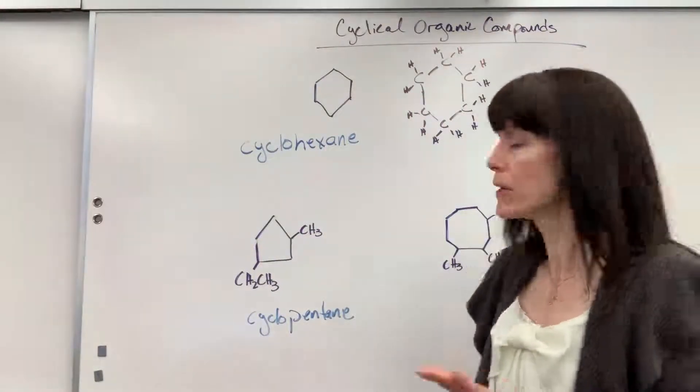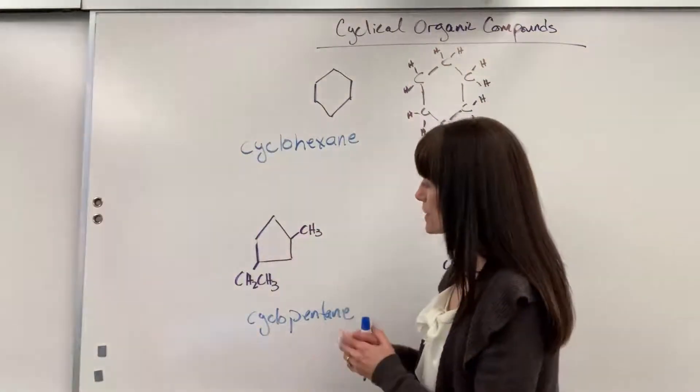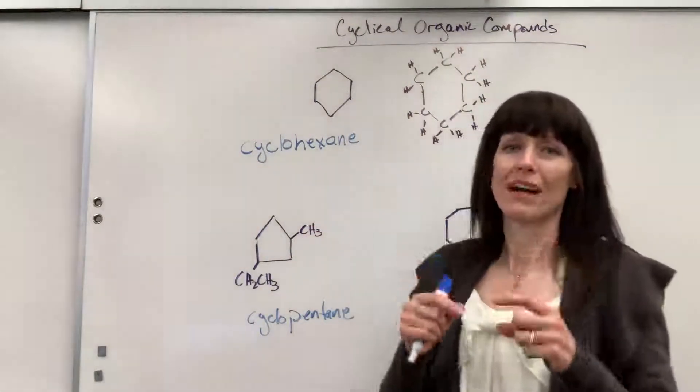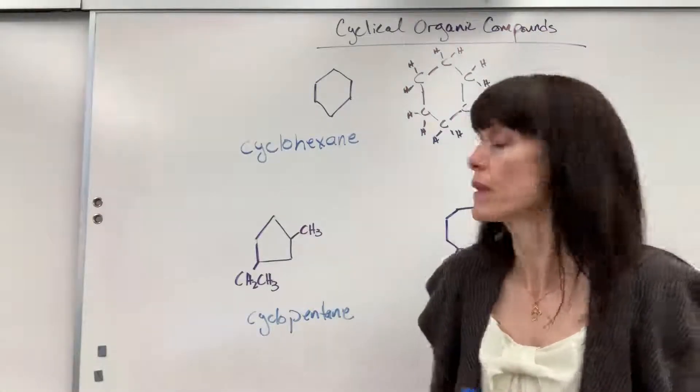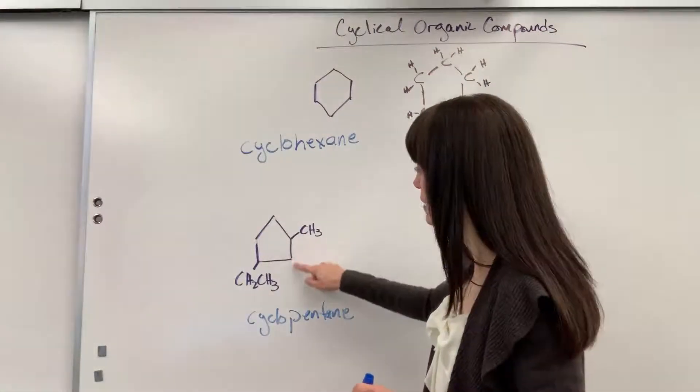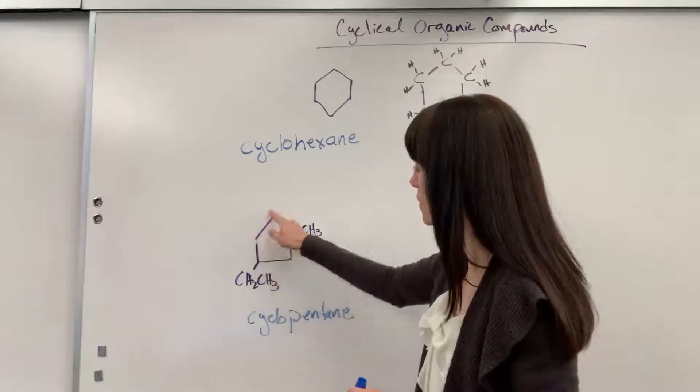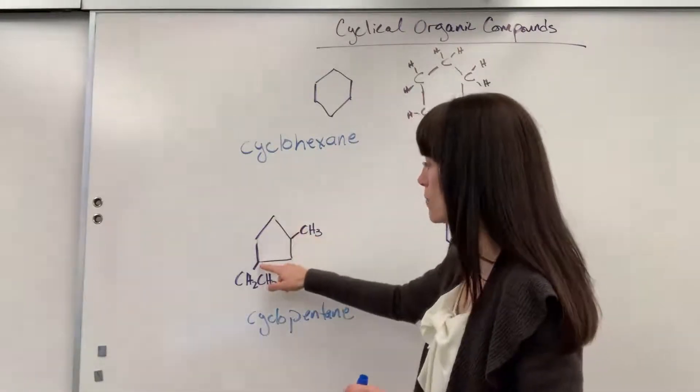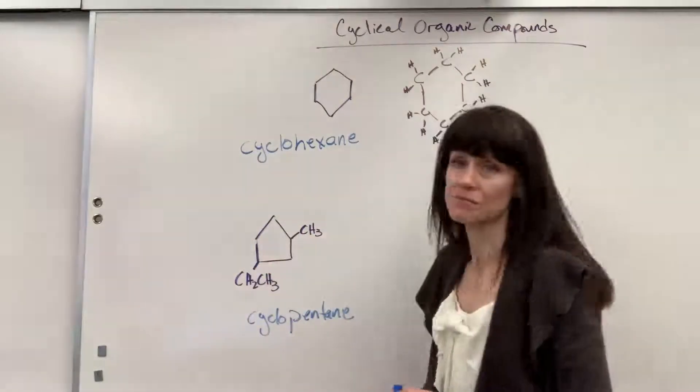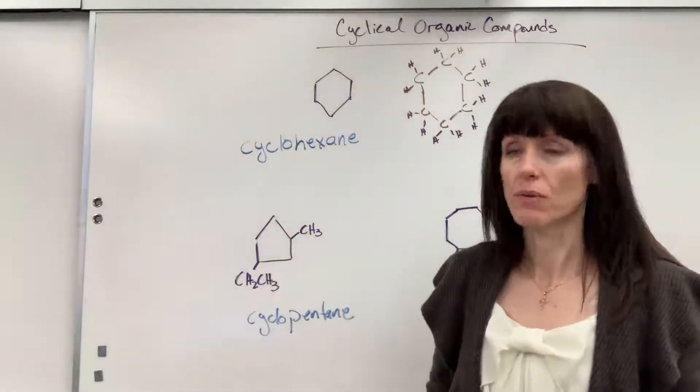So we're going to number this and you always number the cyclical ring to provide the smallest address, the smallest numbers possible for the substituents. So we could go one, two, three, four, five. If I went the other way, one, two, three, four. No, one, two, three. Oh, so we could do this either way.